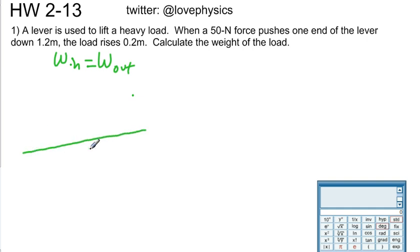So what you have is a lever on a fulcrum, and there's a heavy load here. It says that that load is unknown. You use the force on this end to push down, and the weight or the force used here is 50 Newtons, and the distance that this moves here is 1.2 meters. The distance that this moves here is 0.2 meters.